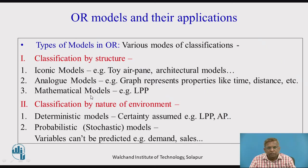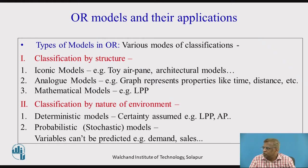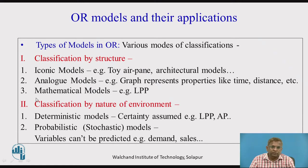The third model is mathematical. Examples of mathematical models include LPP — linear programming problems — inventory control, assignment problems, and transportation problems. Many models are there; we will discuss them briefly a little while later. These are the three models under this first mode of classification.